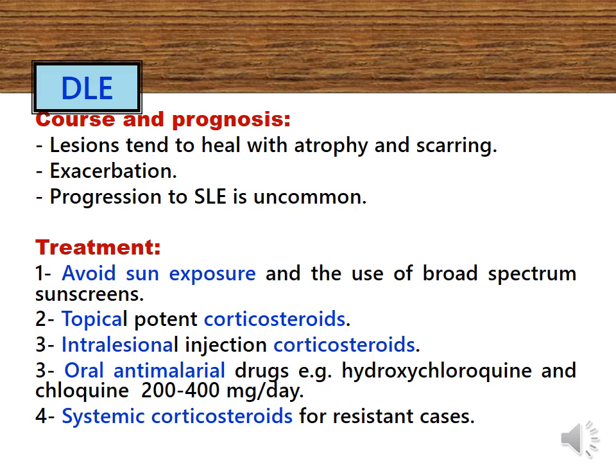Usually, the lesions of discoid lupus tend to heal with atrophy and scarring. Exacerbation may occur, and progression to systemic lupus is uncommon.